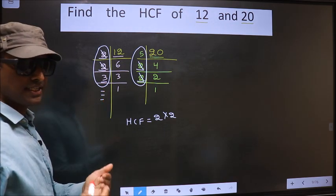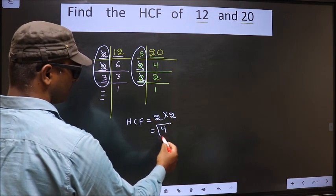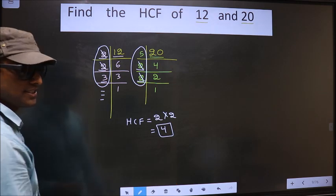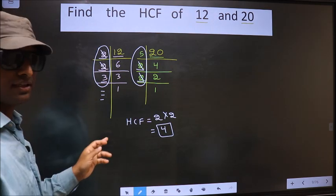So our HCF is 2 into 2, 4. So 4 is our HCF. Am I clear?